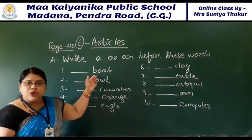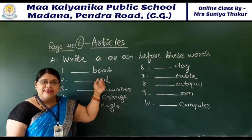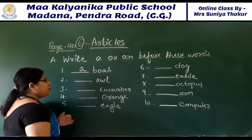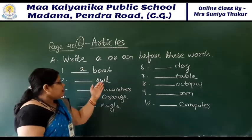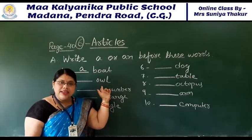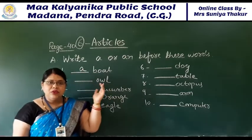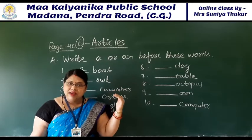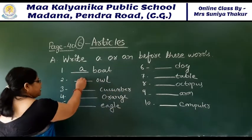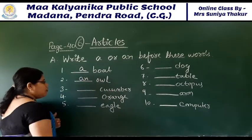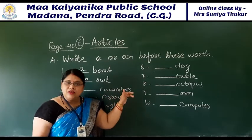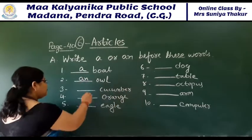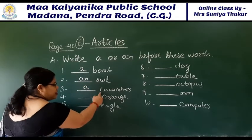There is 'boat' - it has started with a consonant, so what will you call? A boat. There is 'owl' - O, and O is a vowel: A, E, I, O, U. So if it is a vowel sound then what will you call? AN - an owl. There is 'cucumber' - A cucumber, because C is a consonant.